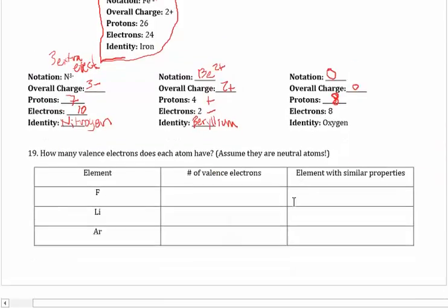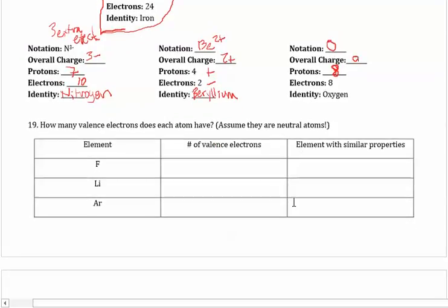For number 19, it says, how many valence electrons does each of these atoms have? And assuming we're neutral. So I'm looking at fluorine. And fluorine is in the 7a column on your periodic table. And if you count over, that means that you also count over 7. So it has 7 valence electrons.